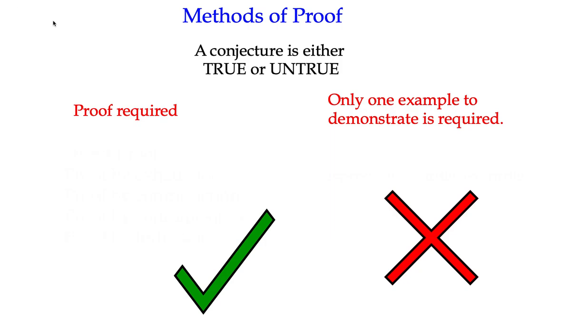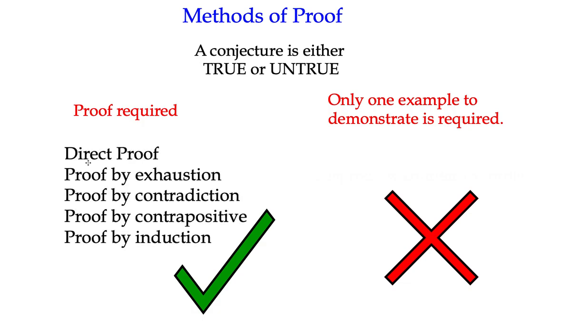So here's a kind of basic idea of what we're doing. A conjecture is either true or untrue. If it's true, you're going to need to come up with a proof. And as I showed on the first slide, here are some of the ways in which we can do it. We're going to have a look at most of these.